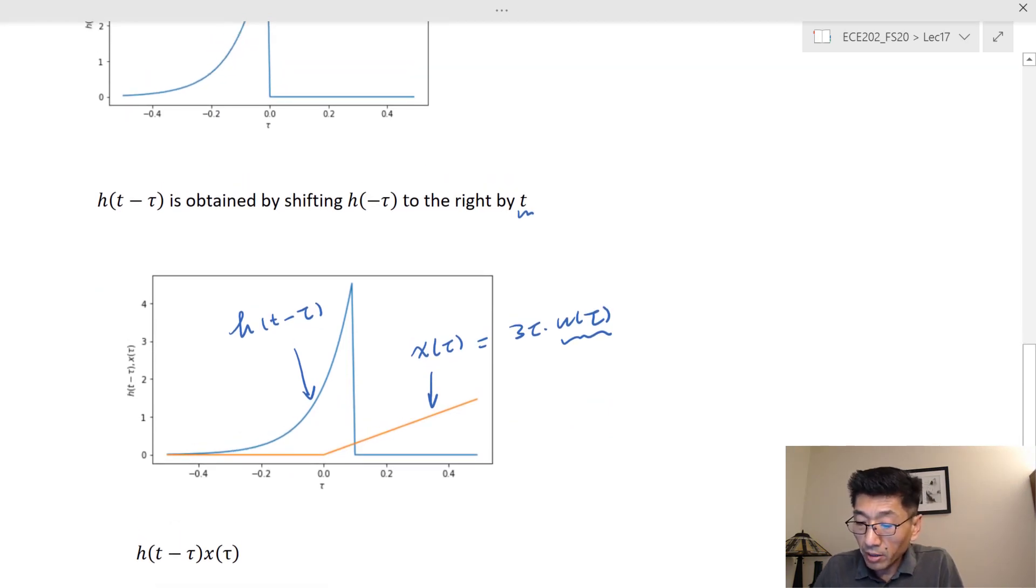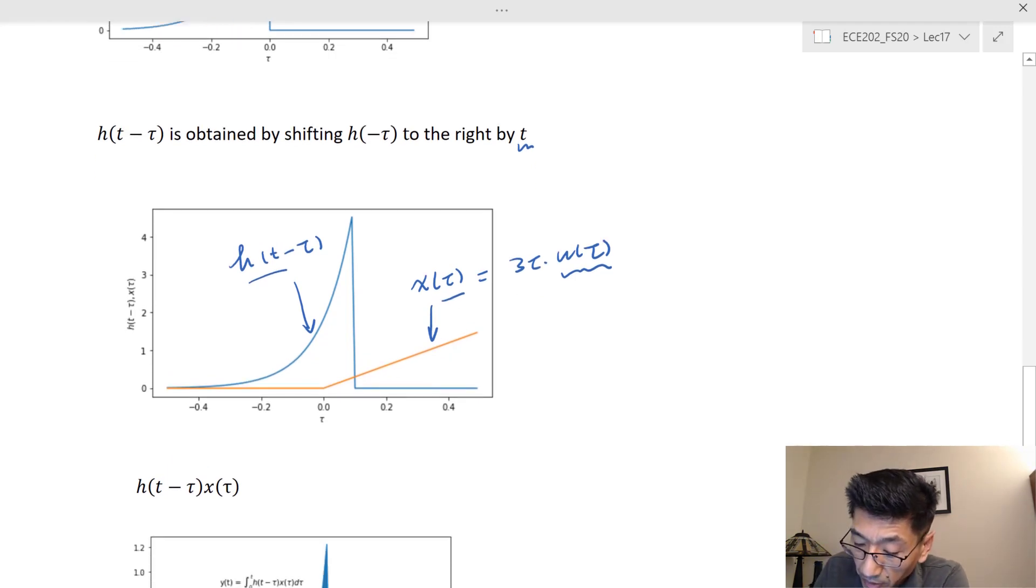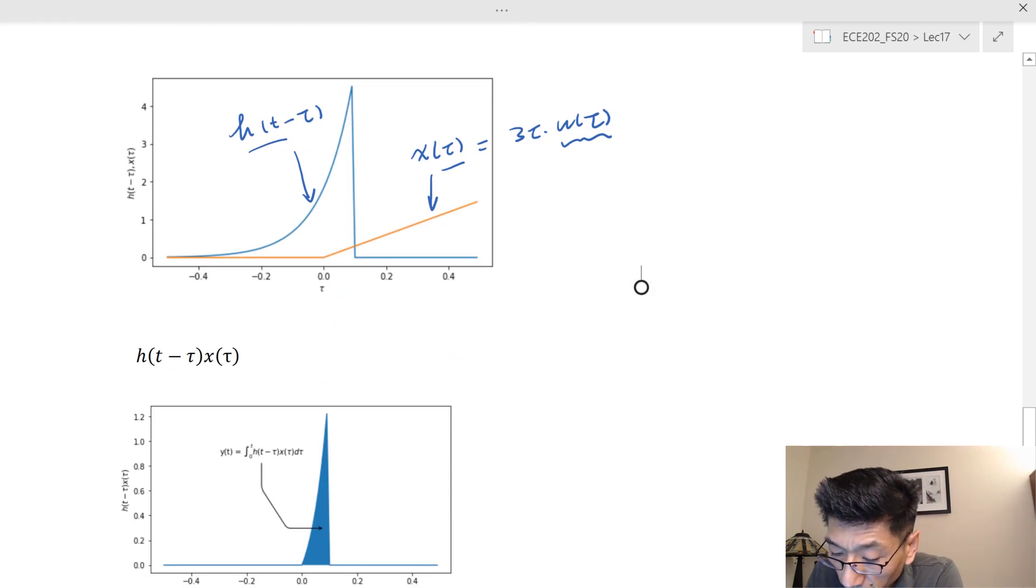And now, the integrand, remember, is just the product of the two. If we take the product, this is the product of the two. The waveform I draw here, this is h(t minus tau) times x(tau). The area underneath this curve, that's the integration. That's the y(t).